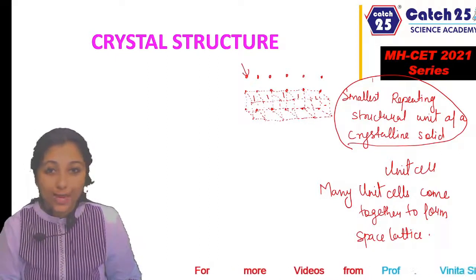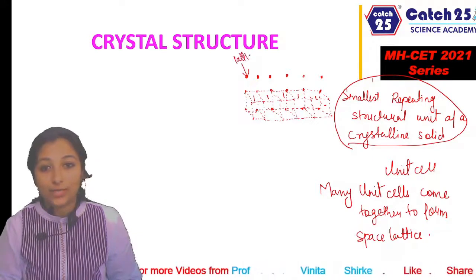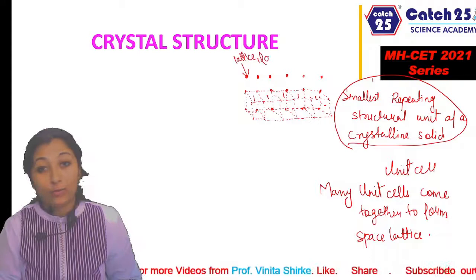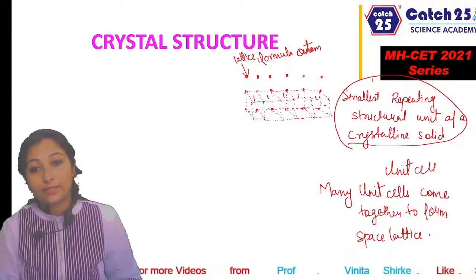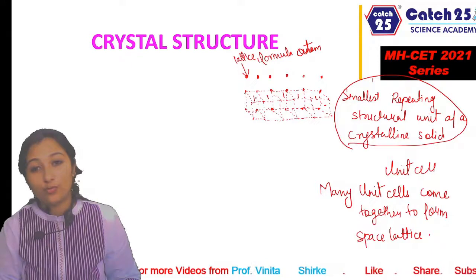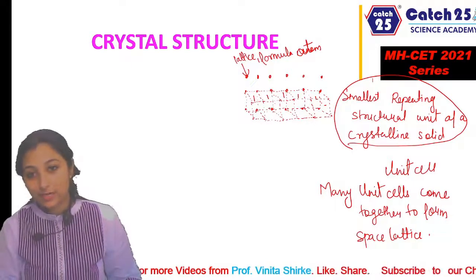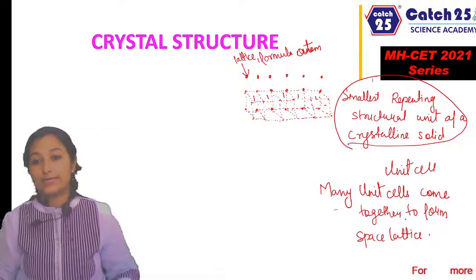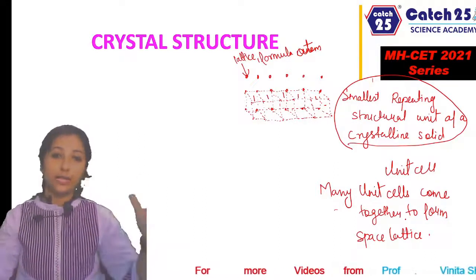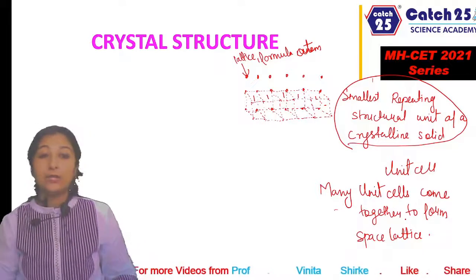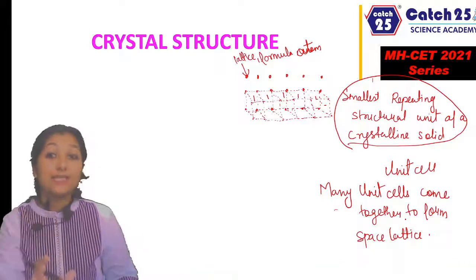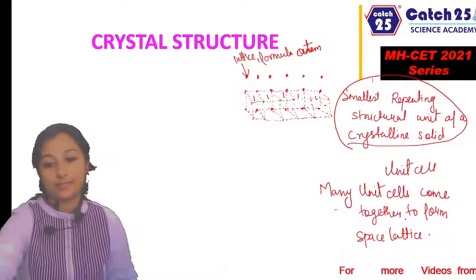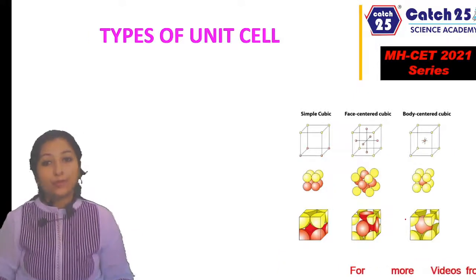Yeh jo atom hai, isko kya bola jata hai? Lattice point bola jata hai — ya phir simply atom bhi bola jata hai. So when lattice points join together to form a unit cell, and when unit cells come together, they form a space lattice. And bahut saara space lattice come together to form a crystalline solid. So abhi ham log next topic mein kya study karenge? What are the types of unit cells?